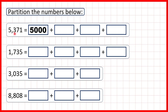Now this 3 is in our hundreds, so that represents 300 — 3 followed by 2 zeros, because we have 2 digits after the 3. This 7 in our tens stands for 70, and this 1 in our ones just stands for 1. So if we add 5,000, 300, 70, and 1, we will get the number 5,371.